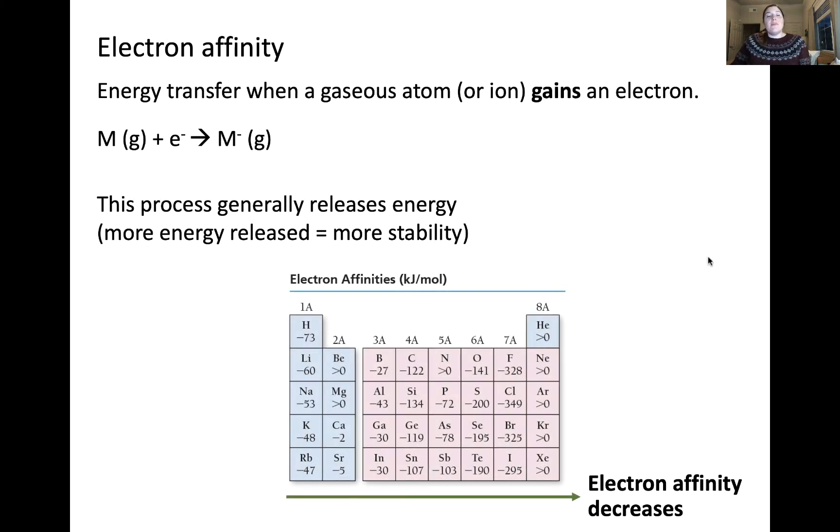The last trend that we'll discuss is electron affinity. And what this means is the energy transfer that's associated when a gaseous species, whether it's an atom or ion, gains an electron. And really, when we're looking at this, we tend to look at it in a kilojoule per mole unit, which means that the energy transfer associated with a mole of gaseous atoms gains a mole of electrons to become a mole of gaseous anions. And this process generally releases energy. And the more energy that's released, the more stability associated with the process.